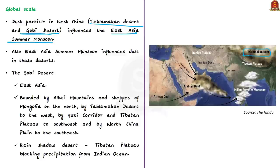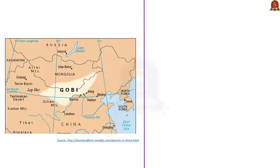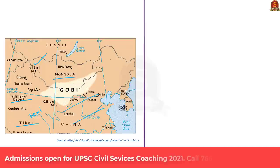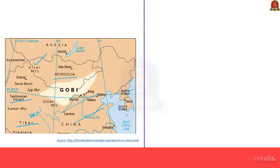The Gobi Desert is located in East Asia. It is bounded by the Altai Mountains and steppes of Mongolia to the north, the Taklamakan Desert to the west, the Hexi Corridor and Tibetan Plateau to the southwest, and the North China Plain to the southeast. The Gobi Desert is a rain shadow desert because the Tibetan Plateau blocks precipitation from the Indian Ocean from reaching its territory.